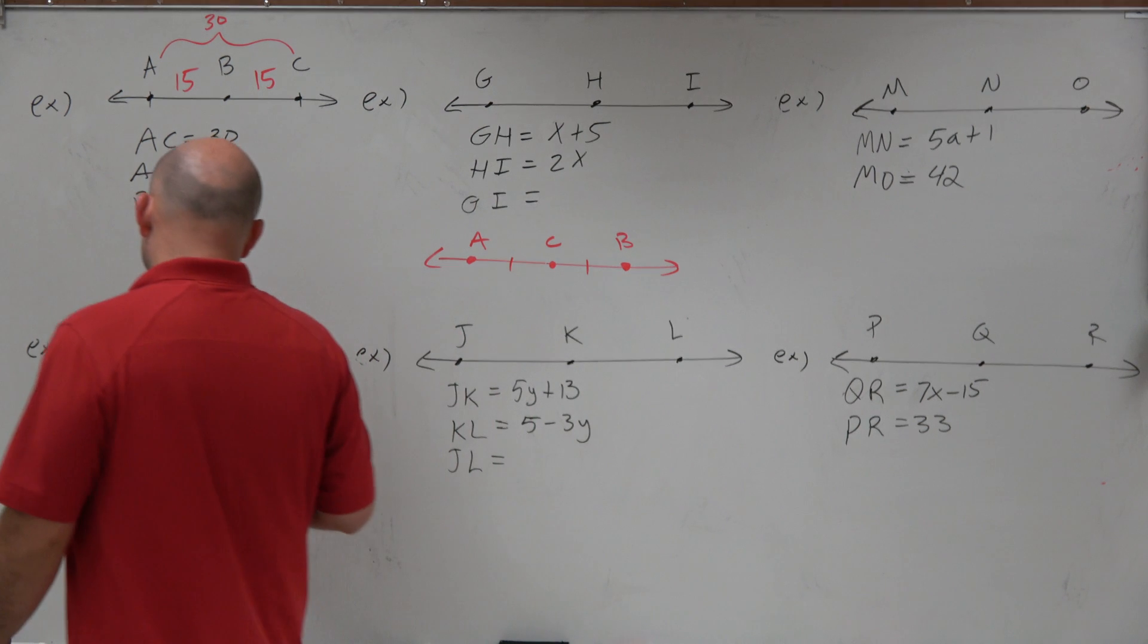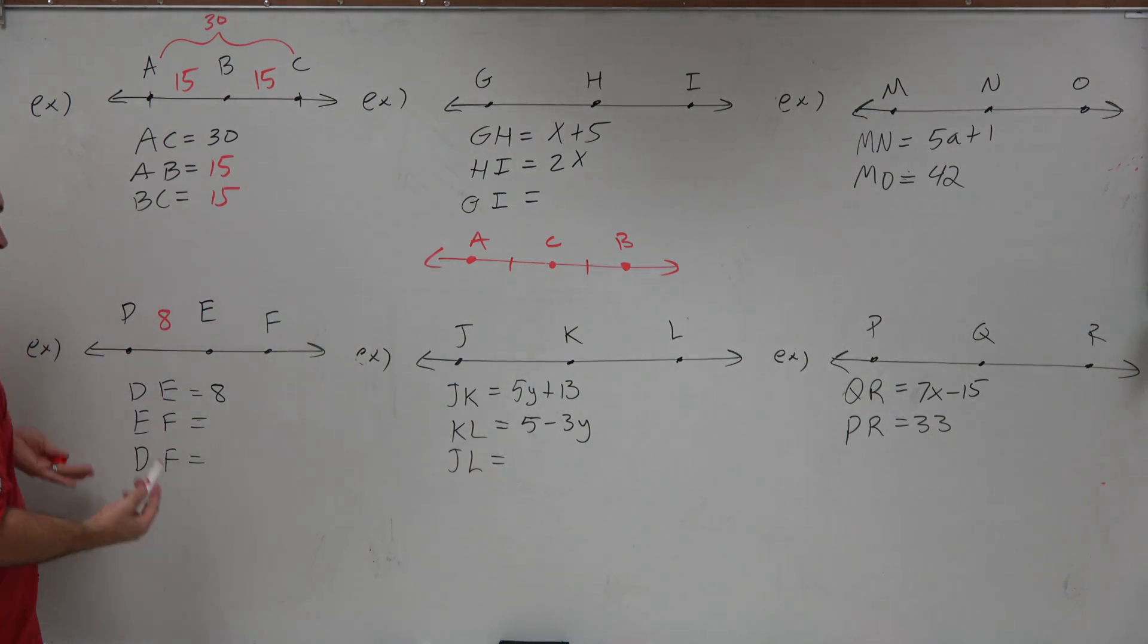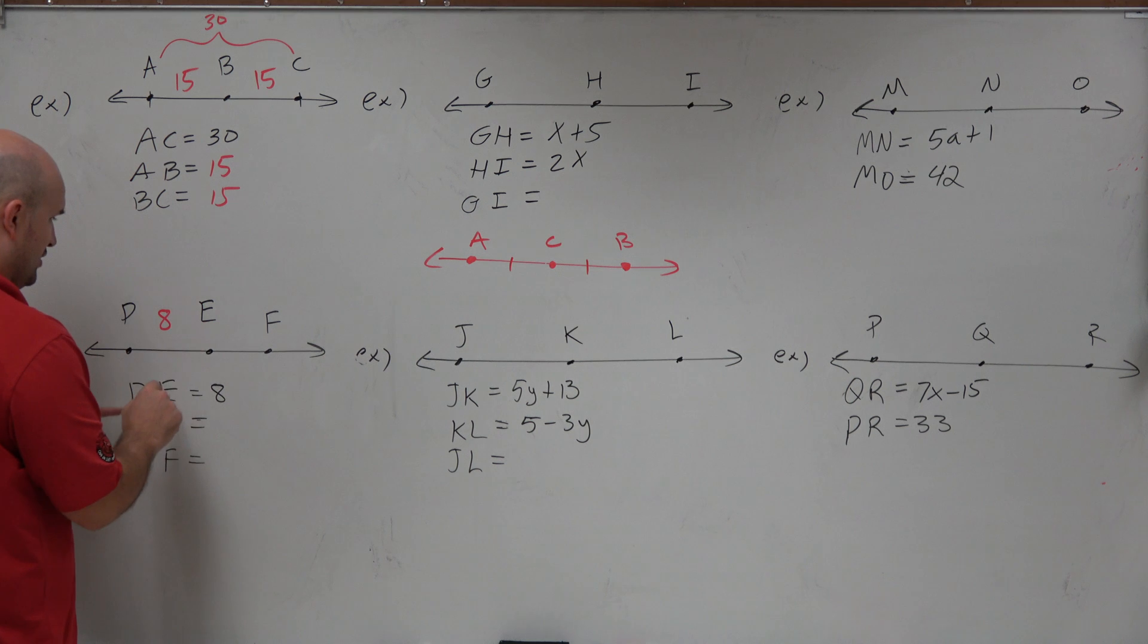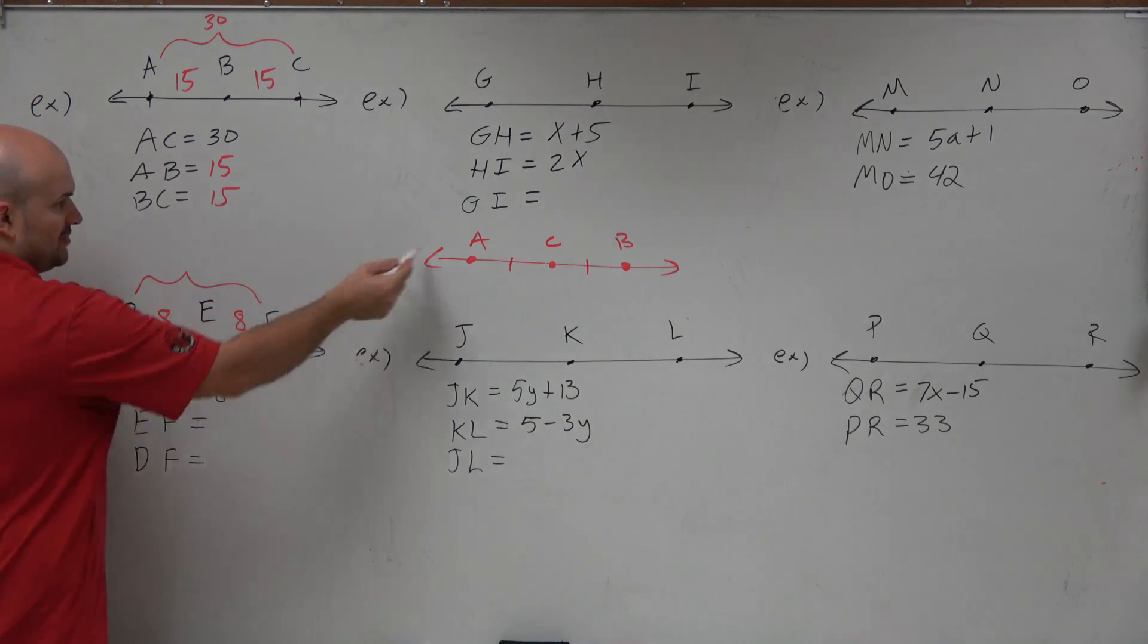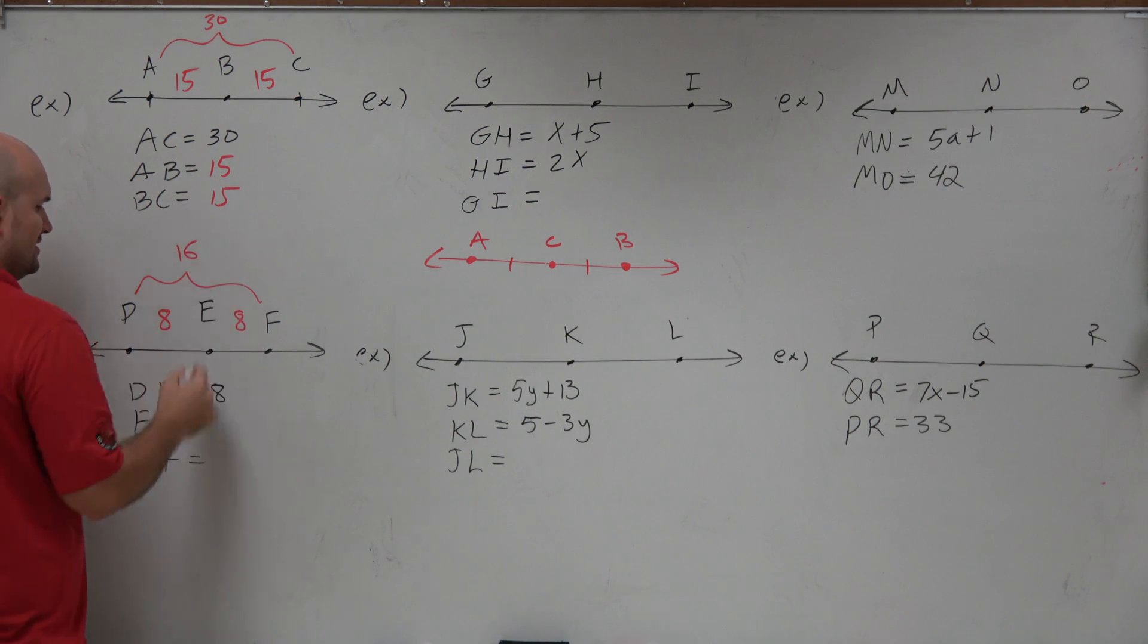In this case, we have DE is now equal to 8. Well, what's important is that now that we know the midpoint, we know that EF is also going to be equal to 8. And then the distance from D to F is going to be those two values combined, which will be 16.